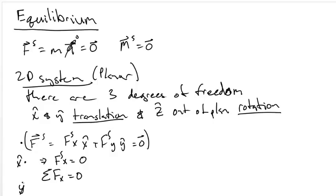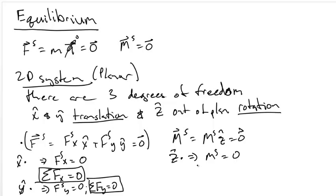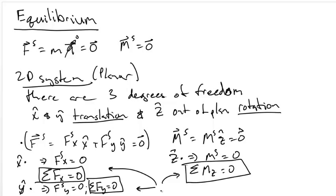Similarly, by dotting in the Y we find that the net force in the Y is equal to zero. This gives us two equations. There is another equation in planar equilibrium: the moments from the system in the Z direction. By dotting with the Z-hat vector we find that the net moments in the Z direction is equal to zero. This gives us three scalar equations in two dimensions.